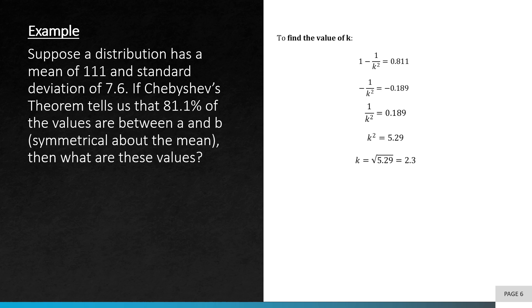Once we have k, we can use this formula, because we know k is the distance between the value of x and the mean over the standard deviation. The distance is basically mean minus the value of x over standard deviation. So now we just input all the values that we know into the formula. k is 2.3, mean is 111, the value of x is unknown so we leave it as x, and standard deviation is 7.6. So by solving for x, we can get two values of x, which are a and b. One is 93.52, and the other is 128.48.